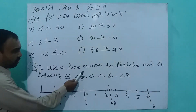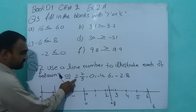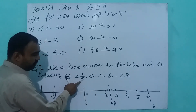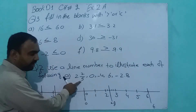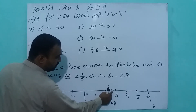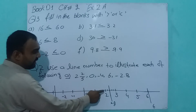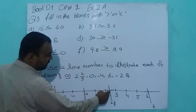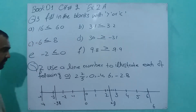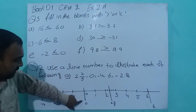Now, first number is 2 and 2 over 5. This 2 is a real number. The denominator is 5, so make 5 equal intervals between 0 and 1. The numerator is 2, so count to the 2nd interval — that point is 2 and 2 over 5. Next is 0, so draw a line at 0.